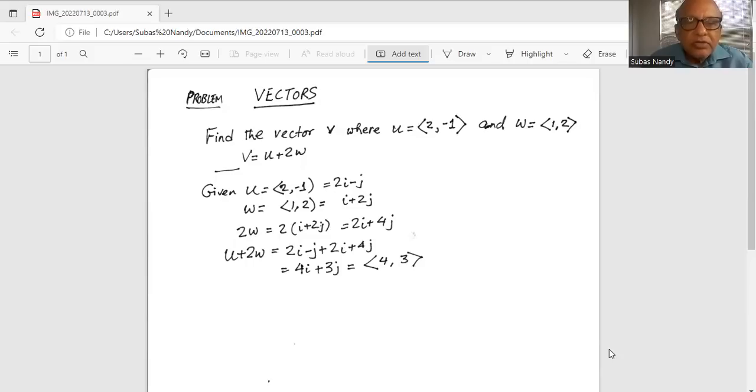Now u plus 2w is 2i minus j for u plus for 2w 2i plus 4j. So ultimately it becomes u plus 2w is 4i plus 3j, which is a vector with endpoints 4 and 3.